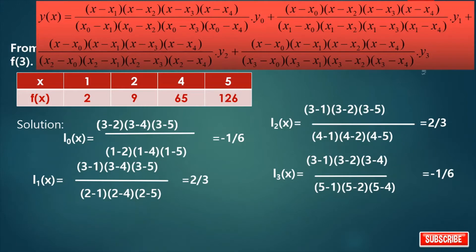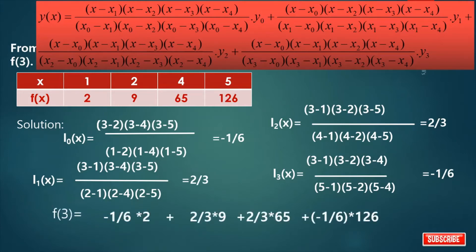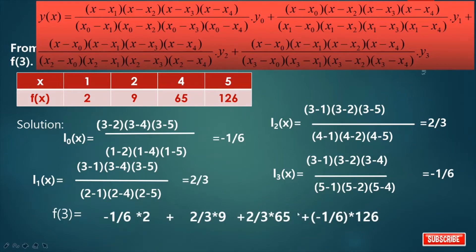After calculation of L0, L1, L2, and L3(x), we apply Lagrange's interpolation formula. So what is f(3)? f(3) equals L0(x) which is minus 1/6 into 2, plus L1(x) which is 2/3 into 9, plus L2(x) which is 2/3 into 65, plus L3(x) which is minus 1/6 into 126. After calculation, we get the value.